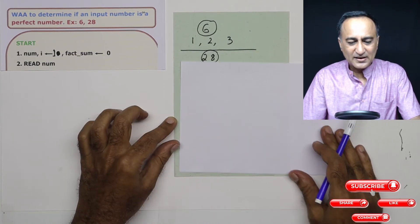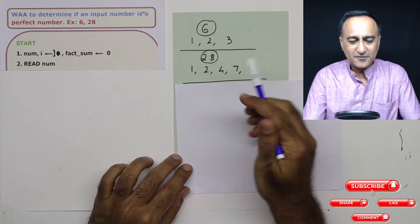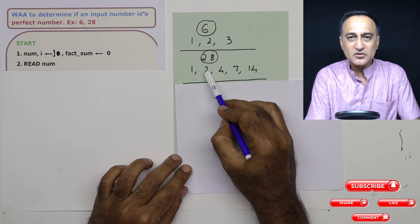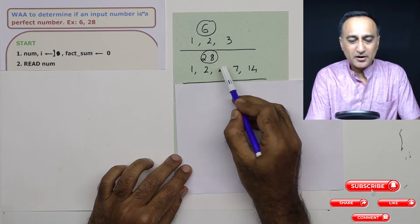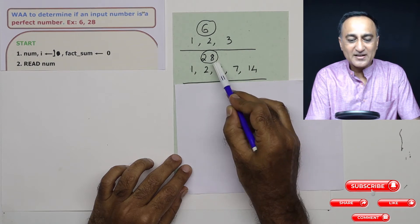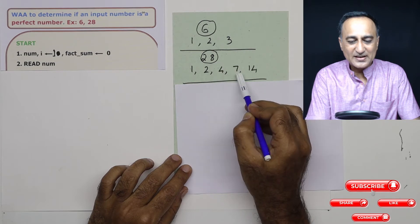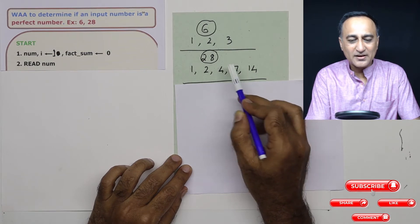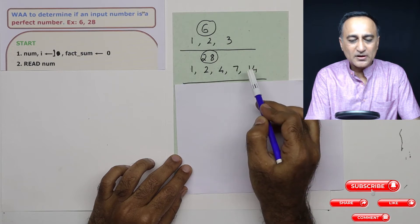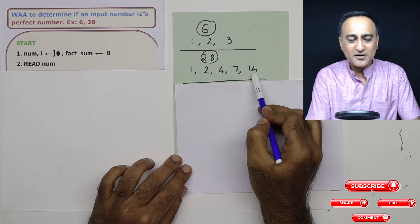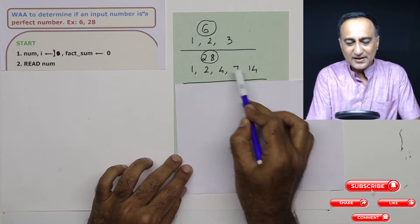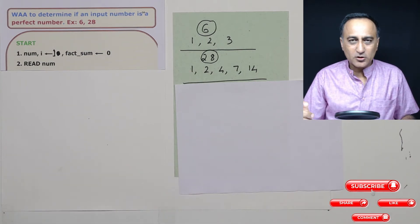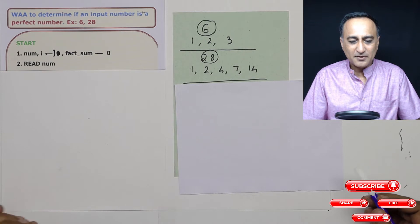Take one more example — the number 28. The first factor of 28 is 1. 28 divided by 2 is also zero. 3 doesn't divide 28. 28 by 4 is zero. 5 doesn't divide 28. 6 doesn't divide 28. 7 divides 28 because the remainder is zero. Then 8, 9, 10, 11, 12, 13 — none of them divide 28. The last number which divides 28 happens to be 14. Now if you add up all of these, it will also equal 28.